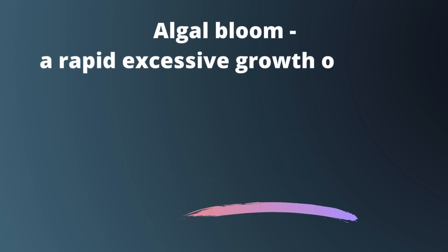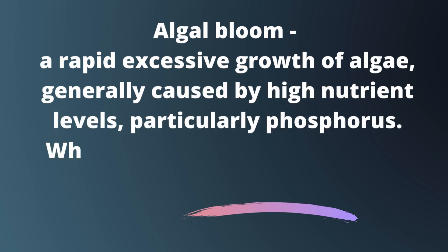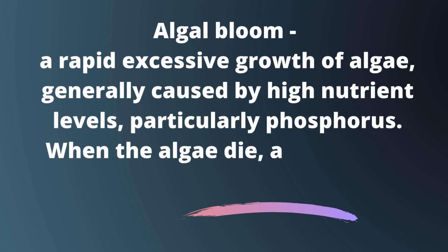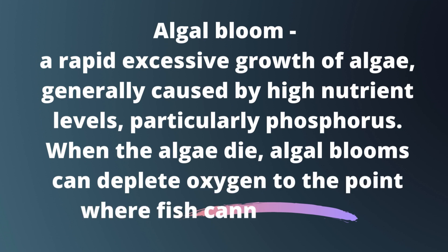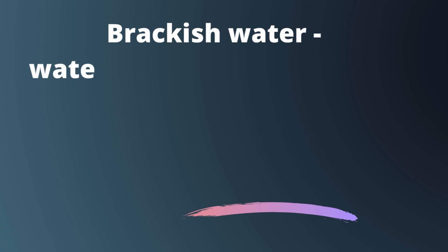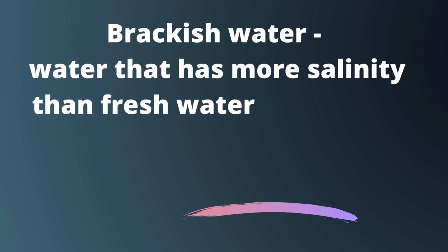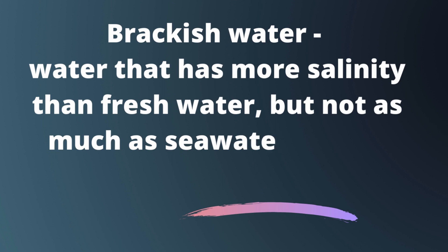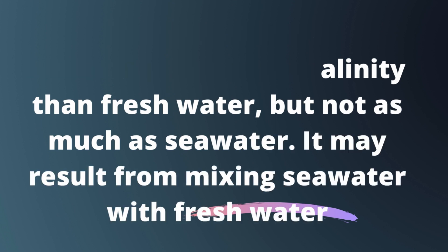Algal bloom: a rapid, excessive growth of algae generally caused by high nutrient levels, particularly phosphorus. When the algae die, algal blooms can deplete oxygen to the point where fish cannot survive. Brackish water: water that has more salinity than fresh water but not as much as sea water; it may result from mixing sea water with fresh water.